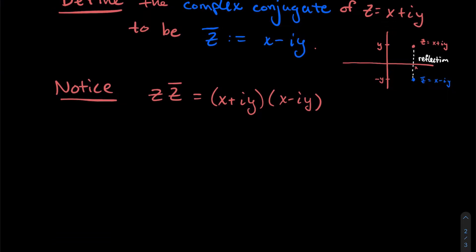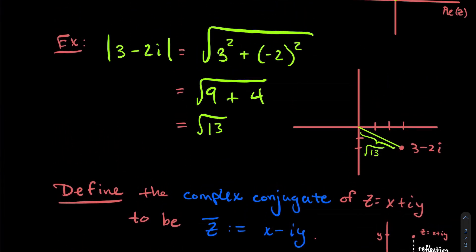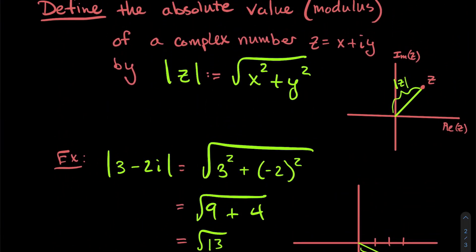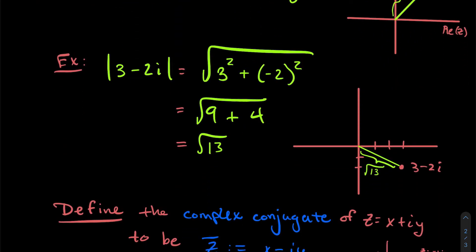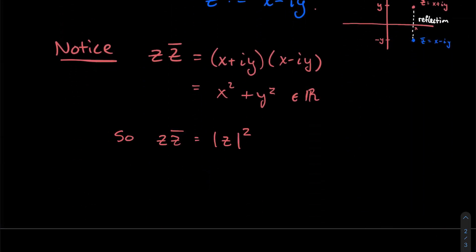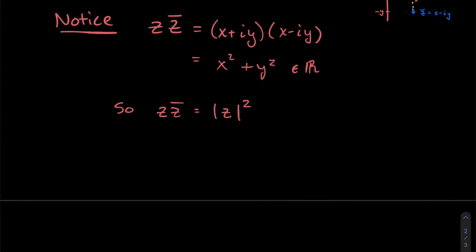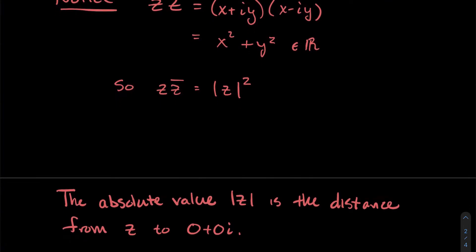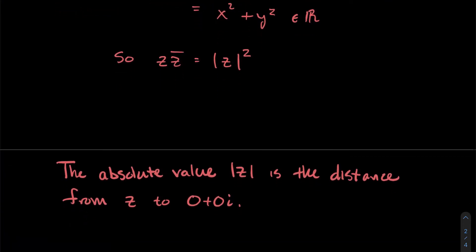Let's look at some things to notice about z and z̄ and how they interact algebraically. Computing z times z̄ and foiling gives x² + y², which is a real number. Notice that x² + y² is exactly what's under the square root in the definition of |z|. So putting this together: z times its conjugate equals the modulus squared — that is, z · z̄ = |z|².